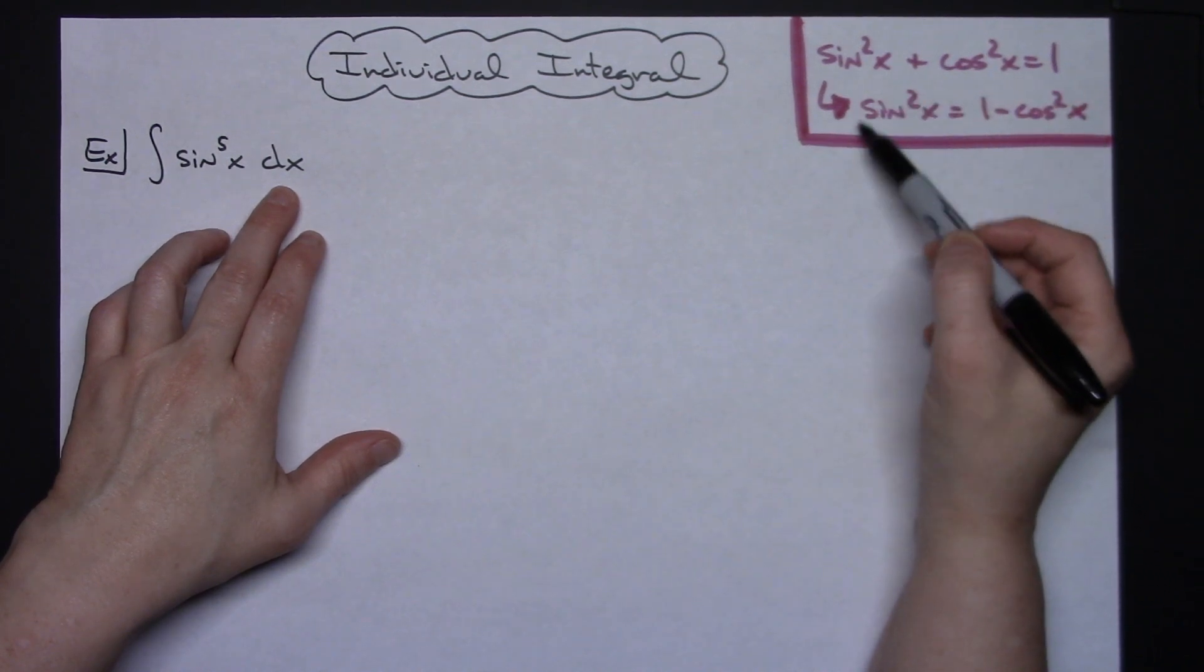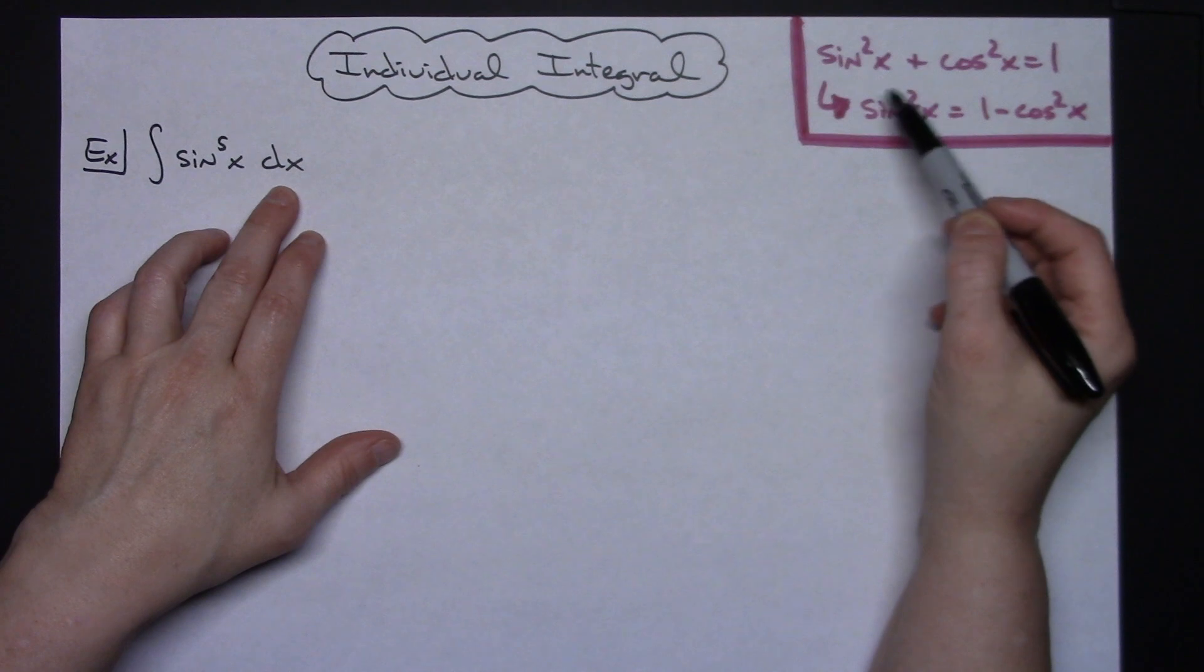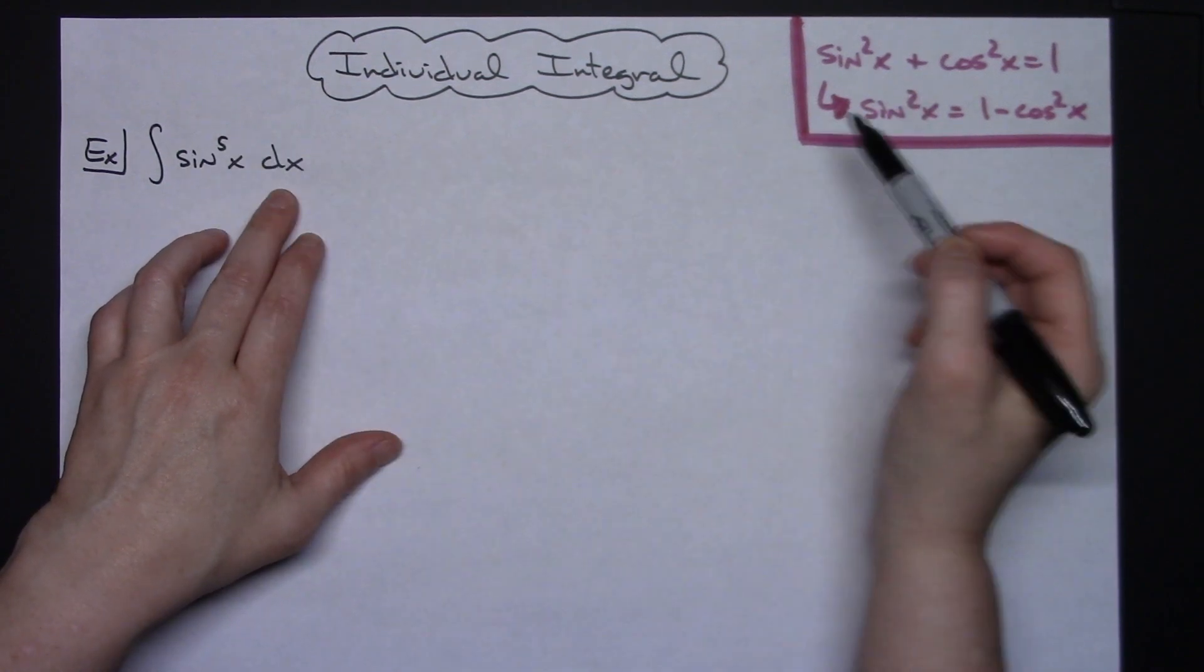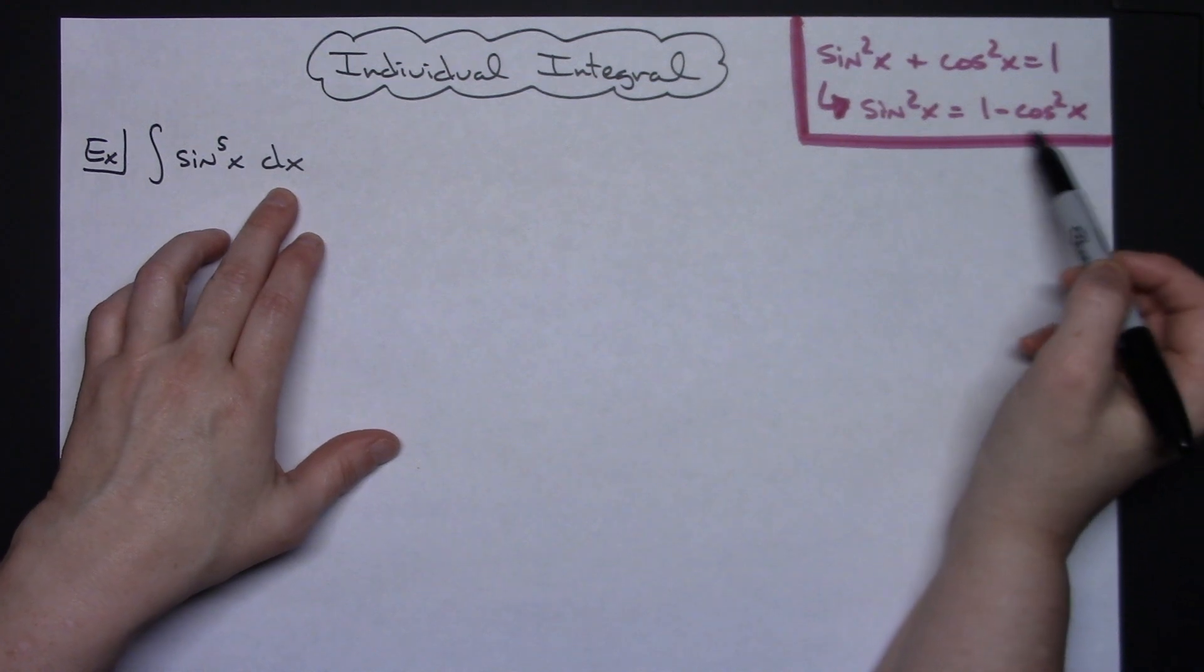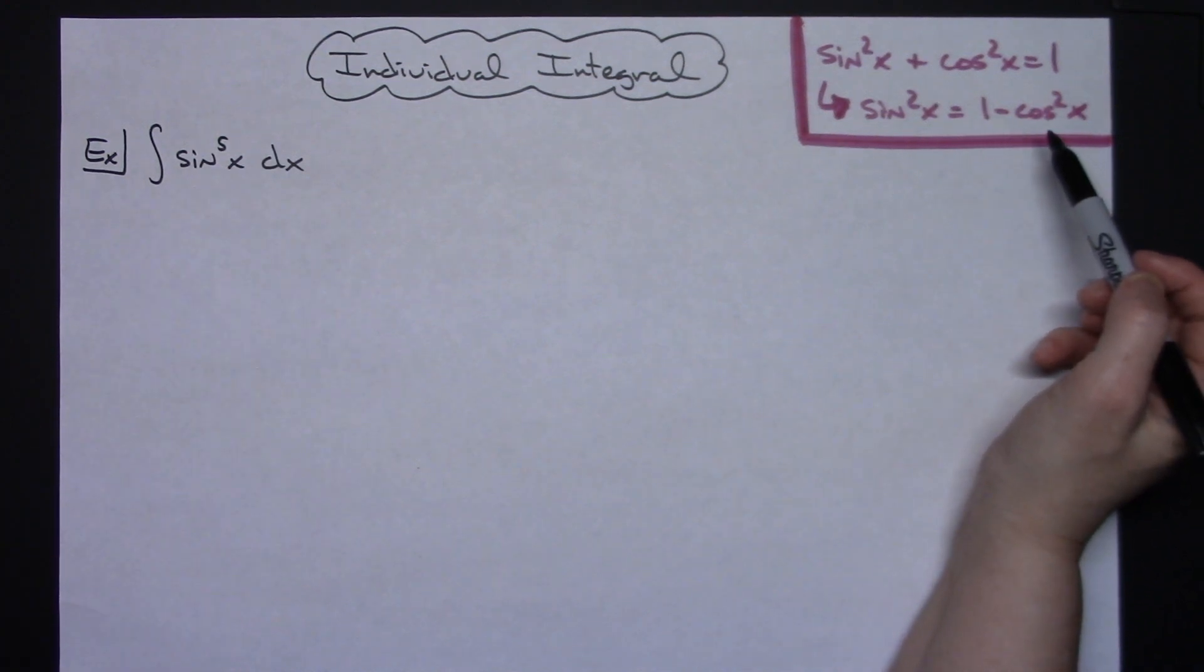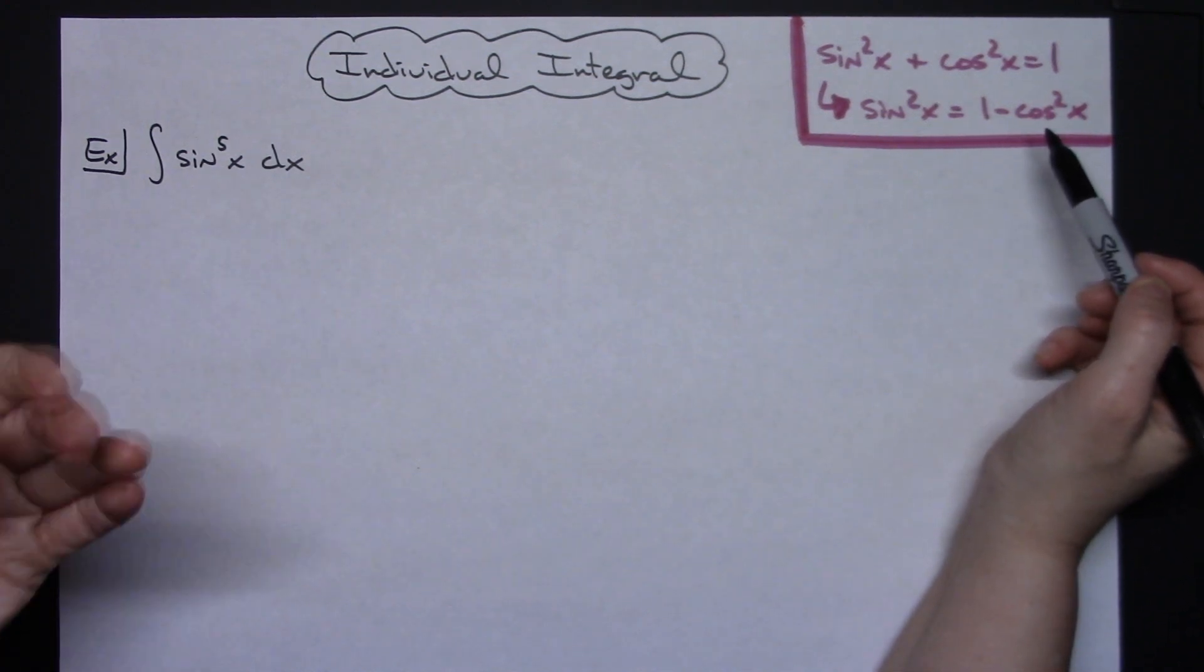We're going to solve that and remember that as long as we can get this into a form of sine squared x, then we're going to be able to do a substitution there that's going to allow us to work out a nice u-substitution.